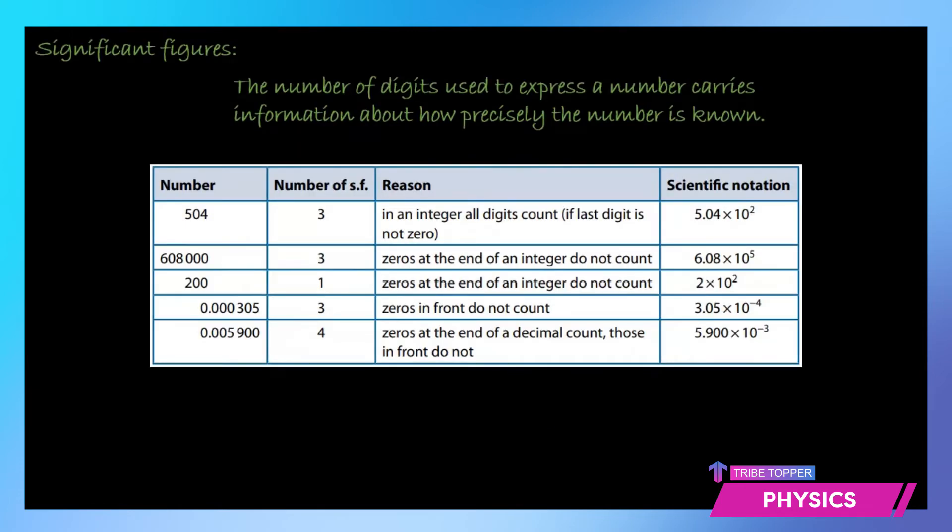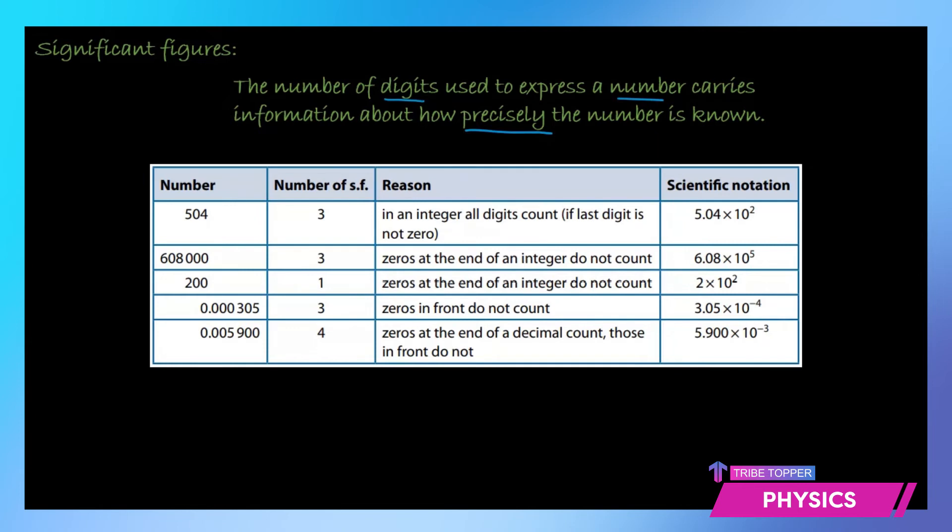Now let's talk about significant figures. Significant figures are basically the number of digits that are used to express a number and they carry information about how precisely the number is known. There are certain rules you cannot just count anything and ignore anything. The first rule is that if you have an integer all the digits are countable if that is not a 0.